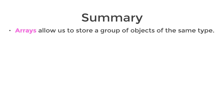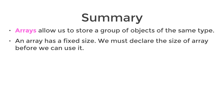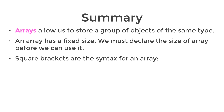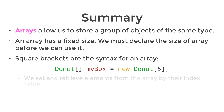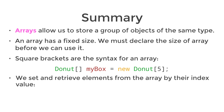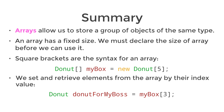In summary, arrays allow us to store a group of objects of the same type. However, we must declare the size of the array before being able to use it, and the square brackets signal that we're creating or using an array. We set and retrieve elements from the array by using the row number or index value of the element.